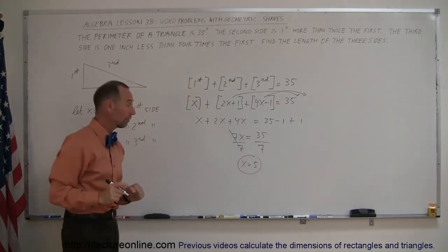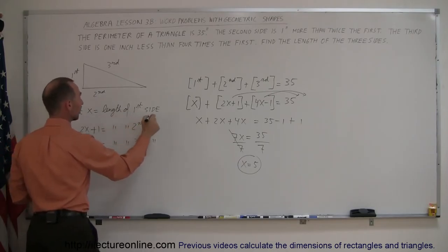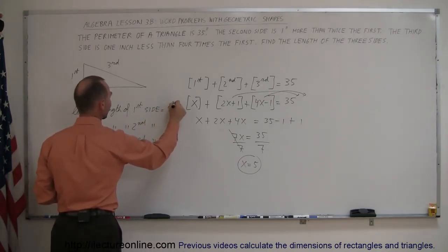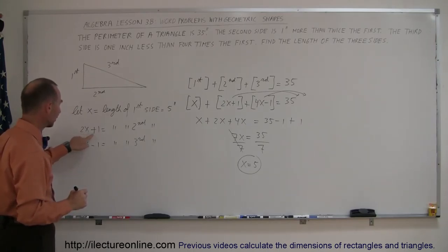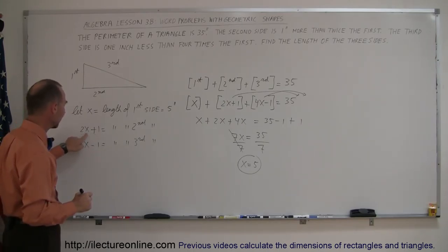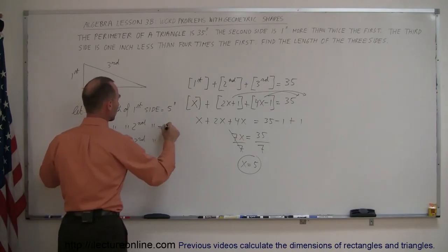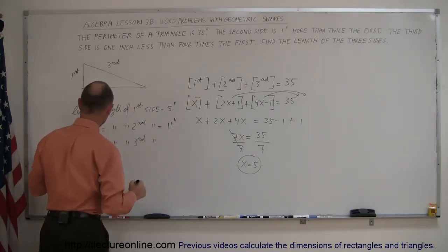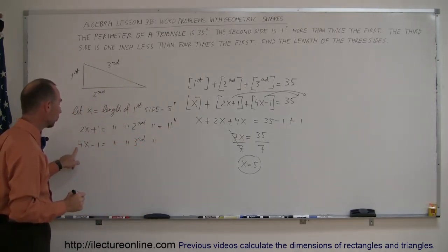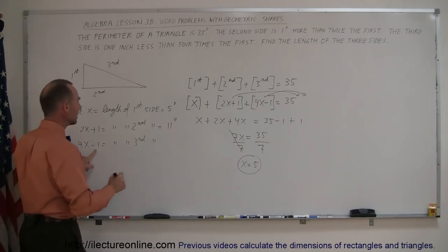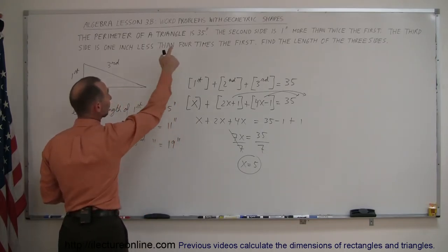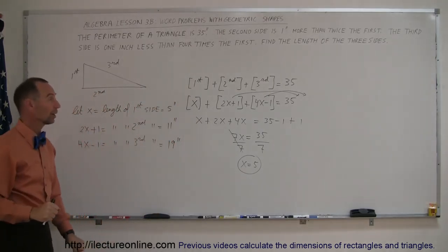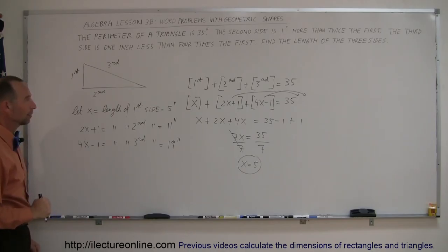Going back to our definitions: x equals the length of the first side, so the first side is 5 inches. The second side is 2 times 5 plus 1, which is 10 plus 1, giving 11 inches. The third side is 4 times 5 minus 1, which is 20 minus 1, giving 19 inches. Adding 5, 11, and 19 together, we get 35 — which confirms our answer is correct.